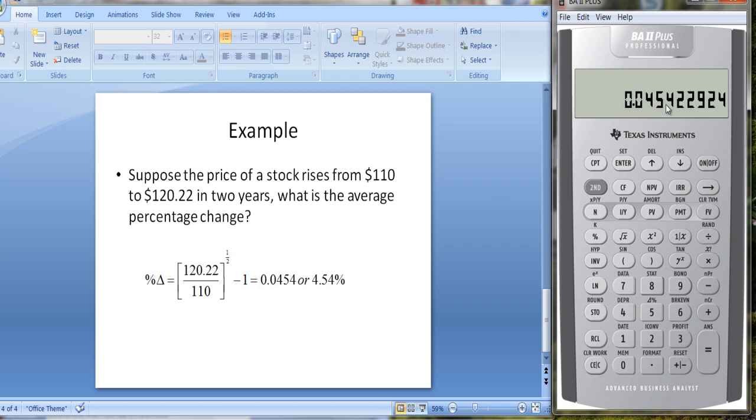0.0454 or 4.54%. Again, we can use our worksheet. We have the same old price, same new price, but we have two periods. Let's put that in, hit enter, and we'll calculate the percentage return. Again, we get the same number. This is rather nice that you can use this